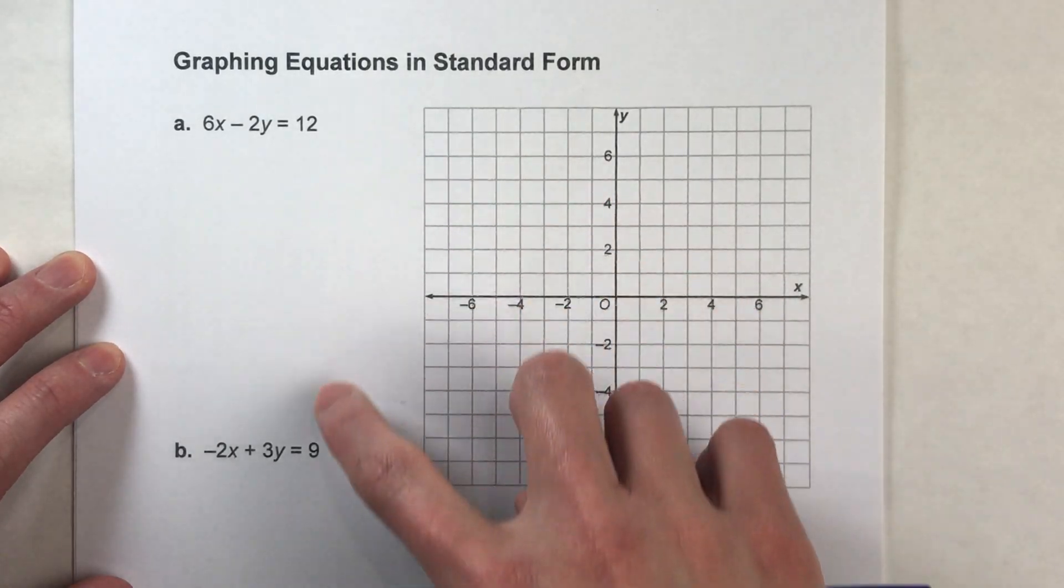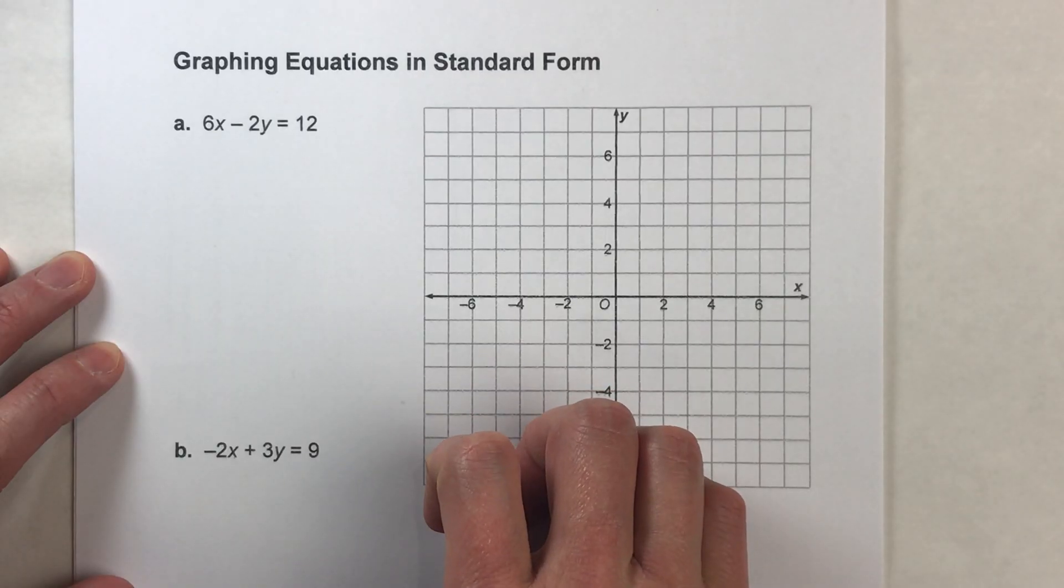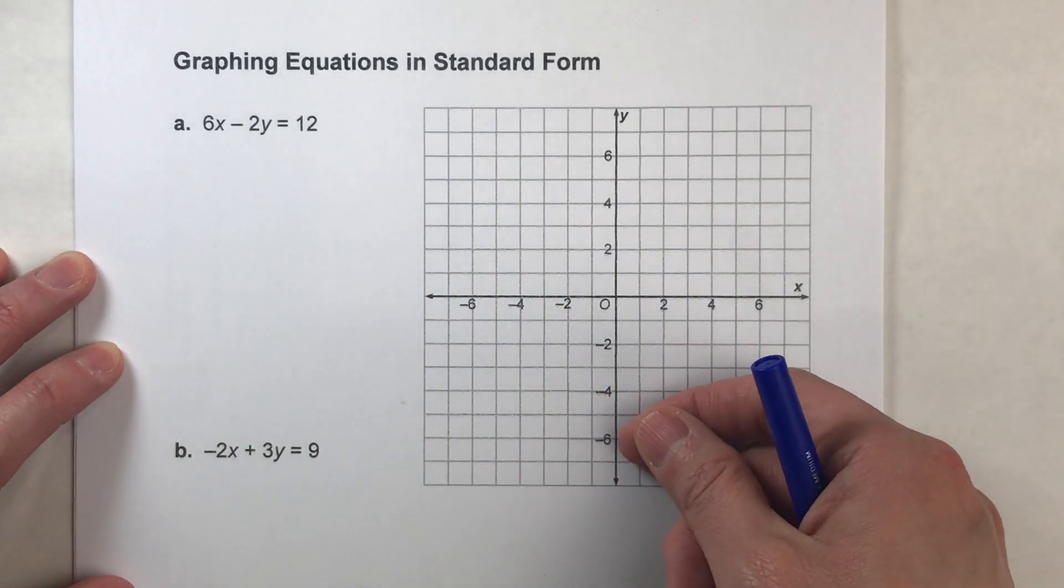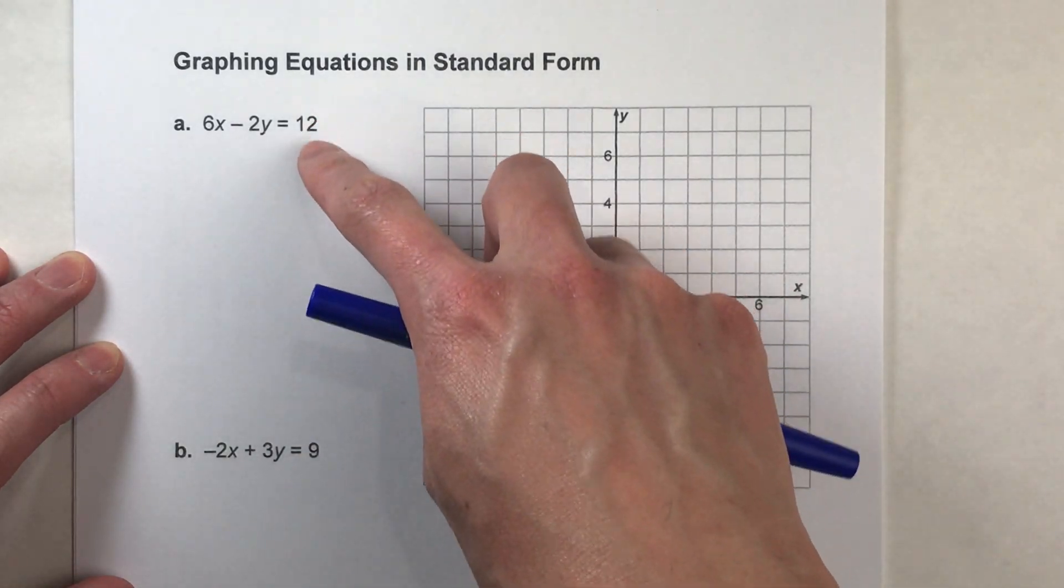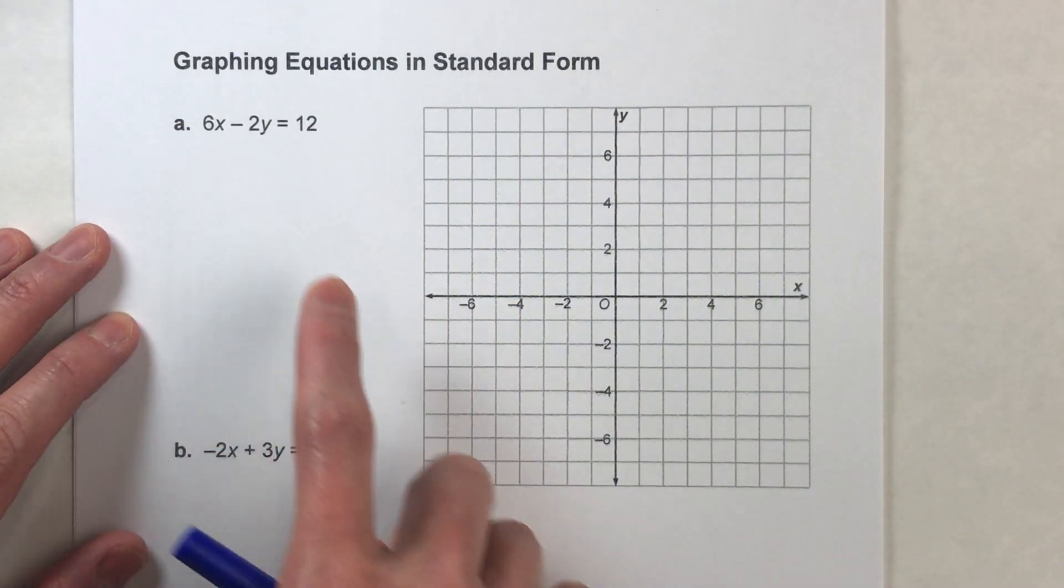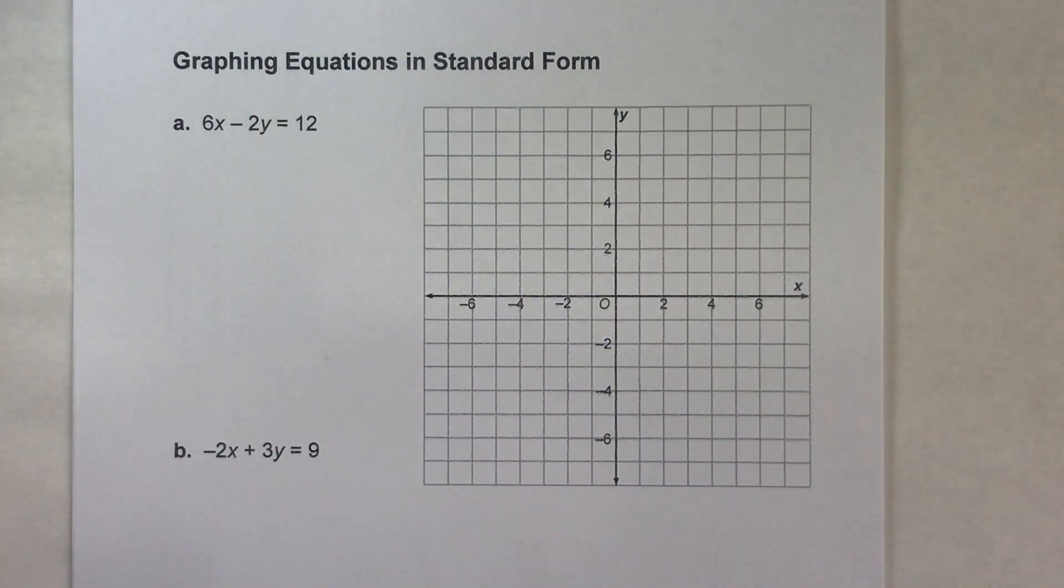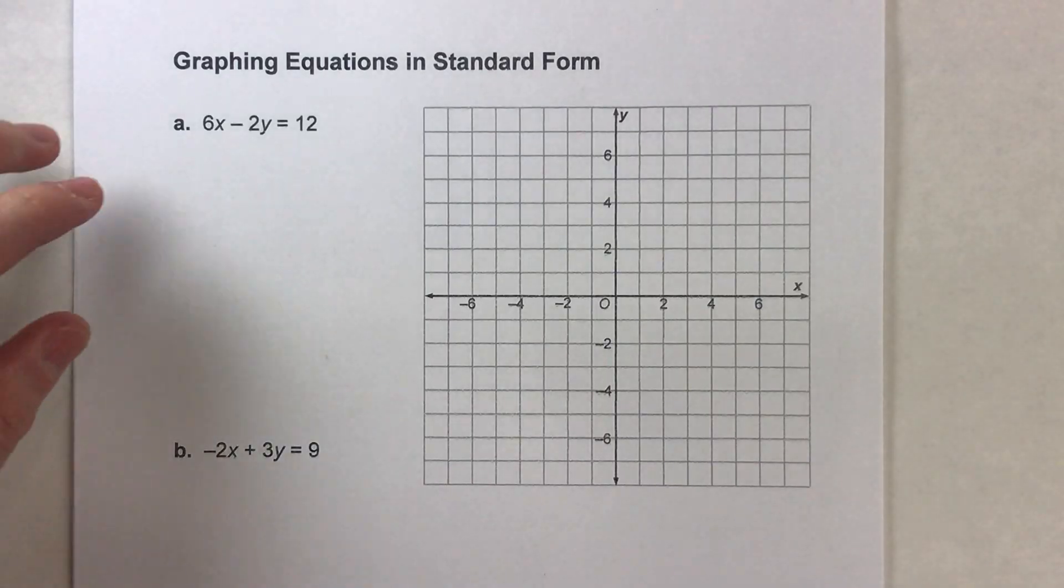Now we're not used to graphing equations in standard form. We're used to graphing equations that are in slope-intercept form that tell you the slope and the y-intercept. These ones don't do that, so we can't just graph this from just looking at it. However, we can use algebra to get this into slope-intercept form, and that's what we're going to do.